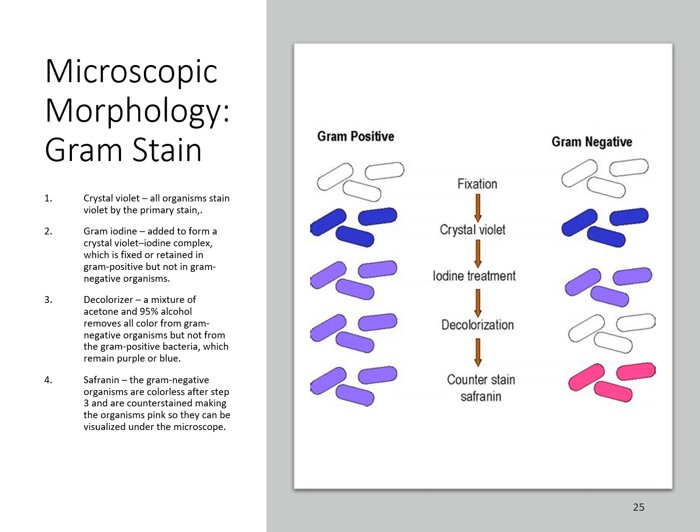With the gram staining technique, after the slide is made and heat fixed, it is flooded with crystal violet — the primary stain. All organisms stain a purple-violet color at this point. You then wash off the crystal violet and add iodine, which helps fuse and retain that crystal violet within gram-positive bacteria but not gram-negative bacteria.